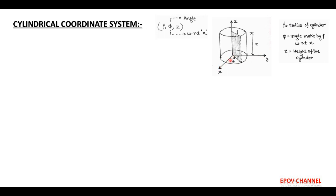And its center is at the origin. So here, rho represents the radius of the cylinder. Now phi is the angle made by rho with respect to the x-axis. So phi is always measured with respect to the x-axis — that is an important point to note. And z is called the height of the cylinder. As shown in the figure, the base of the cylinder is at z equals 0, that is on the x-y plane, so the height of the cylinder is along the z-axis, and we call that height the z coordinate.